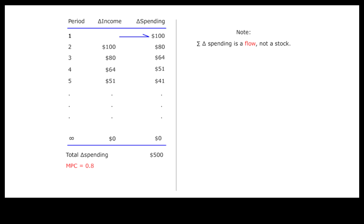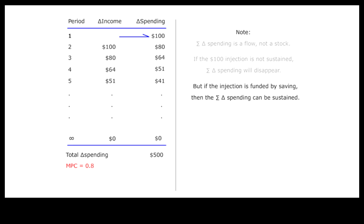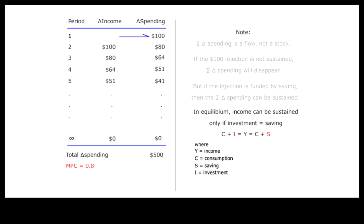Note that total additional spending is a flow, not a stock. In other words, if the injection is not sustained over time, the total additional spending will not be repeated. But if what is saved — that is the part not spent on consumption — is injected back into the spending stream, then the total additional spending can be sustained. In general, a given level of income can be sustained only if planned investment is equal to planned saving, because what is not spent on consumption must be ploughed back into investment to stop the leakage from the income stream.